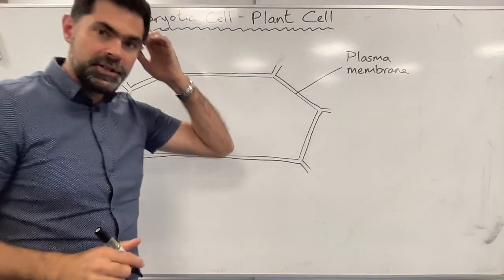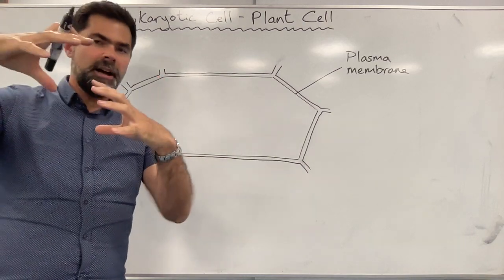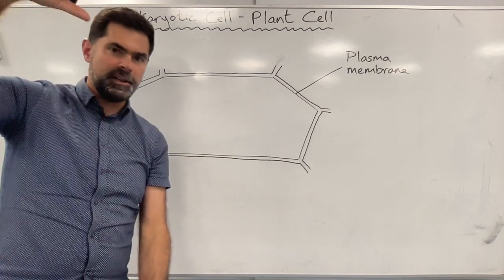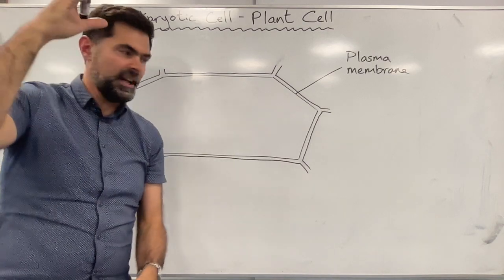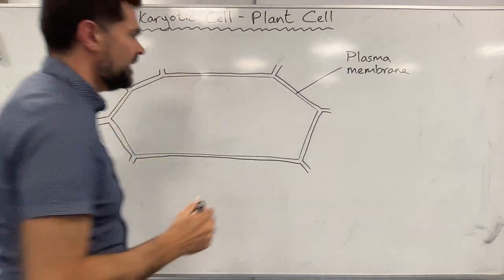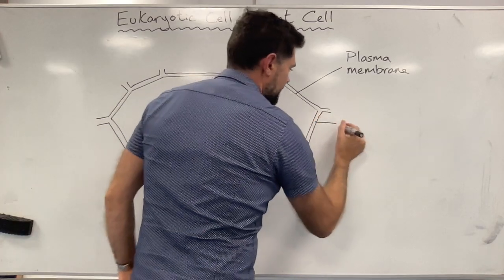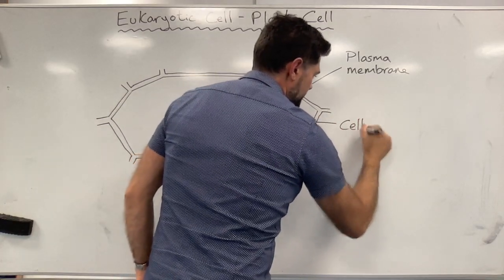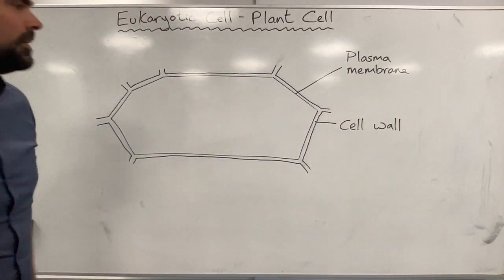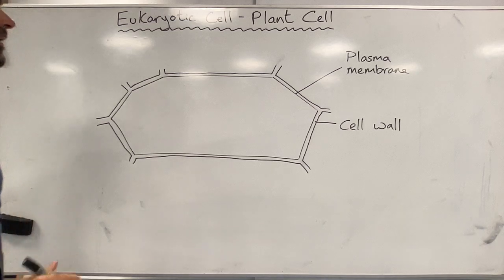The function of the cell wall is to give the cell structure. Plants don't have bones — their cells have cell walls, and that helps them stand upright. The cell wall does not control what goes in and out of the cell; that's the function of the plasma membrane. In plant cells, the cell wall is made out of a molecule called cellulose.